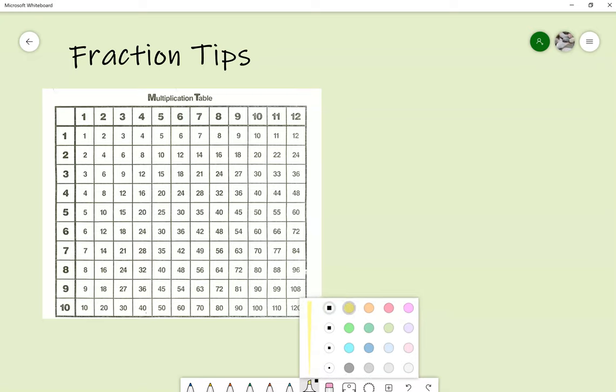If I was looking for 3 fifths and equivalent fractions, if I look at the multiplication table and I highlight the row for the 3 and the 5...